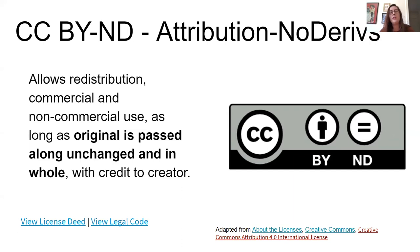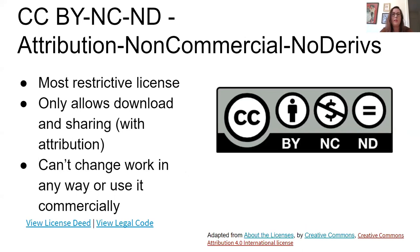The last two licenses are the No Derivatives licenses. Attribution No Derivatives means you have to use whatever the resource is unchanged and as a whole — these are technically not open. And then the most restrictive license means you cannot change it and you cannot make a profit off of it.